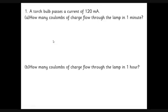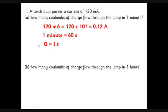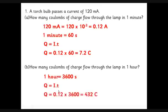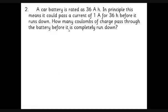A few questions to see if you can handle the numbers. A torch bulb passes a current of 120 milliamps. How many coulombs of charge through the lamp in one minute? Two traps here: this is in milliamps, this is in minutes. First, turn the milliamps into amps: multiply by 10⁻³ gives us 0.12. You've always got a mental check - 120 is less than a thousand milliamps, that's less than an amp. One minute is 60 seconds. Then we do Q = I×t: 0.12 × 60 = 7.2 coulombs. For an hour, it's the same calculation, but an hour is 3600 seconds. Q = I×t: 0.12 amps × 3600 seconds = 432 coulombs of charge.